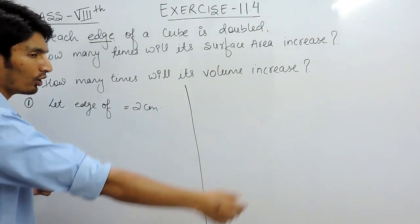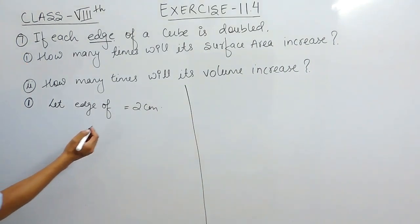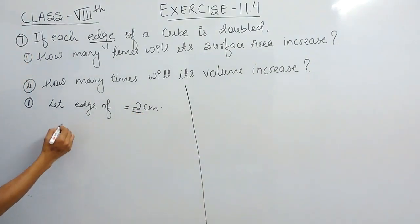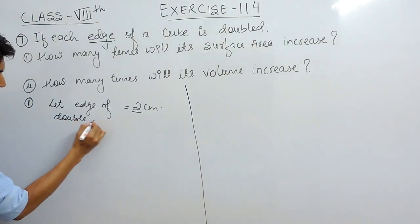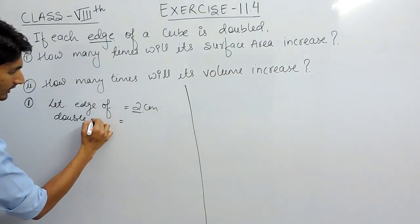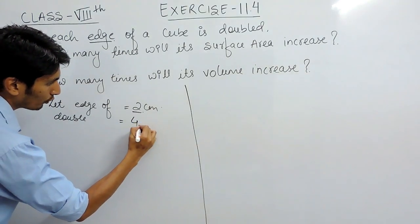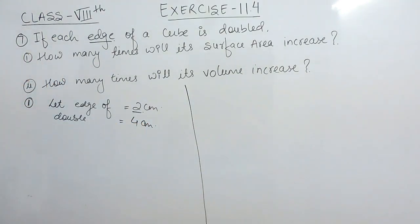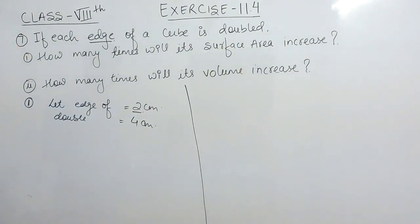So let the edge of any cube be equal to 2 centimeters. You can suppose this as 3, 4, 5, 6, or any other number as you wish. Since we are doubling the edge, the new edge should be equal to 4 centimeters.